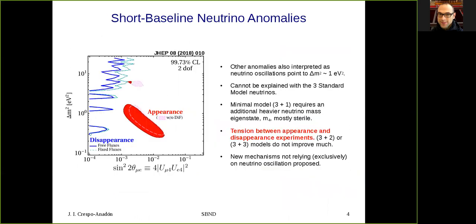The LSND and MiniBooNE anomalies, together with other short-baseline anomalies, when interpreted as neutrino oscillations, point to a delta m squared region of about one electron volt squared. This cannot be explained with the three standard model neutrinos, and the minimal model requires an additional heavier neutrino mass eigenstate, which is mostly sterile. However, there is a strong tension between appearance and disappearance experiments, as shown in the plot. The pion's region, shown in red, is in conflict with the disappearance limit, shown as a blue line. Going to more complicated models, such as 3 plus 2 or 3 plus 3 do not improve this tension. In fact, new mechanisms not relying exclusively on neutrino oscillation have been proposed in order to explain those anomalies.